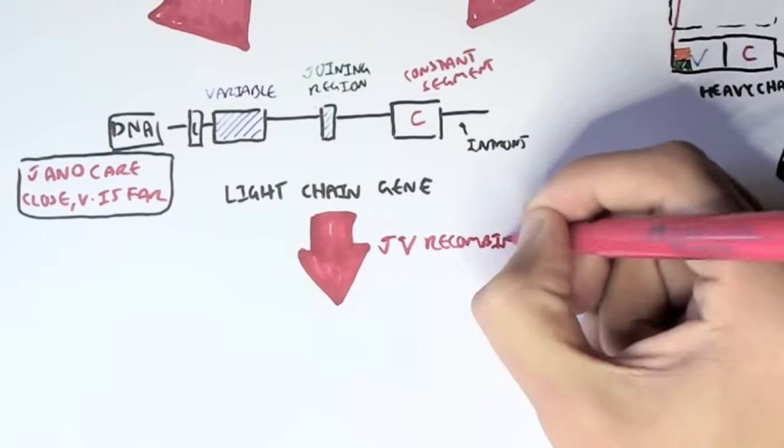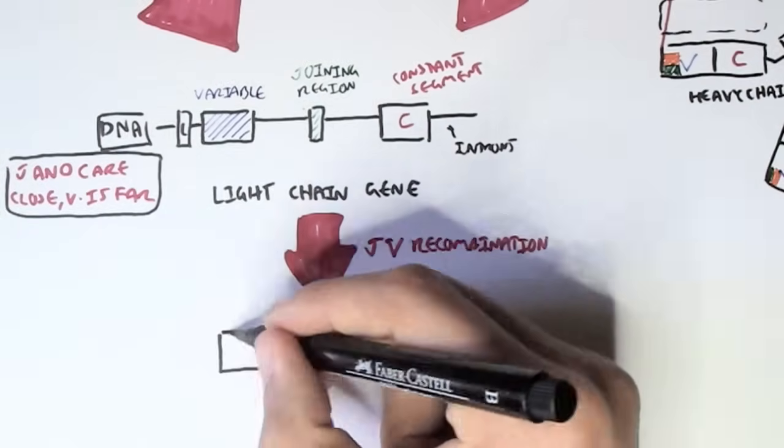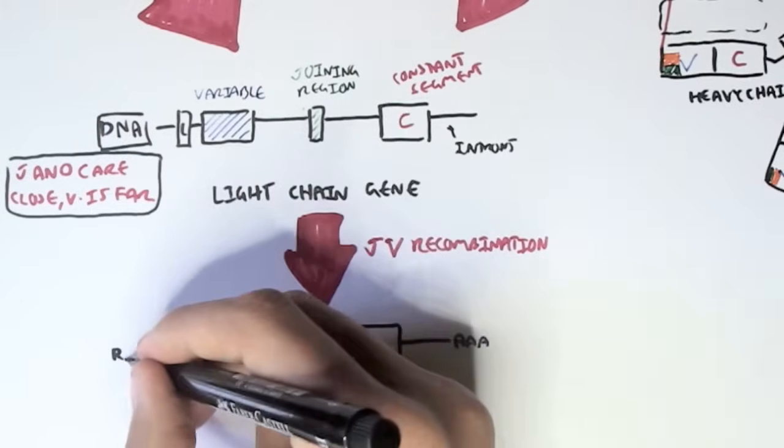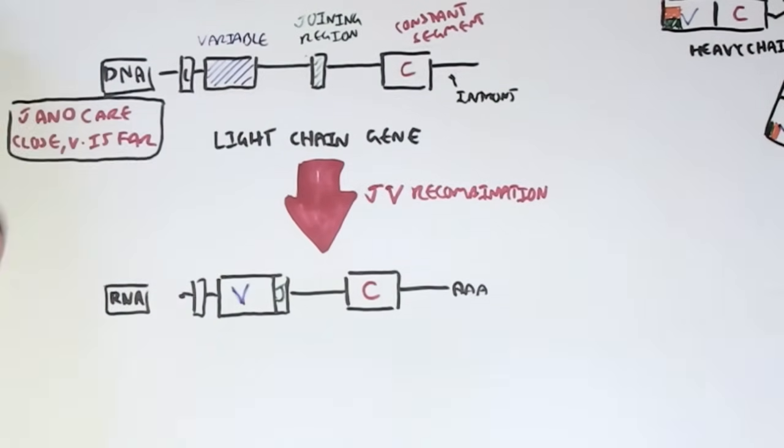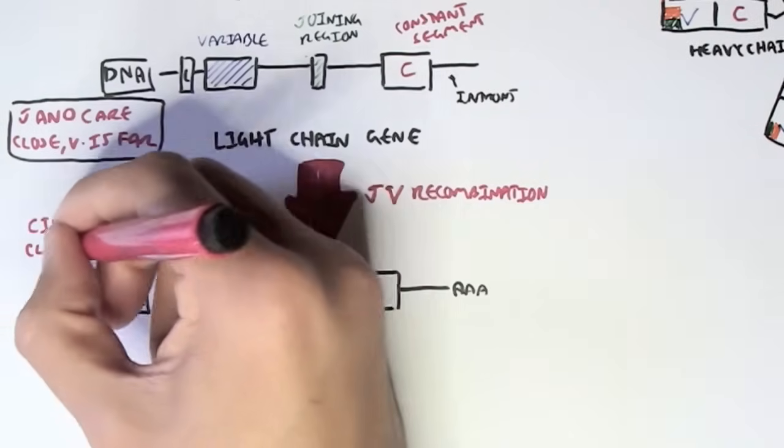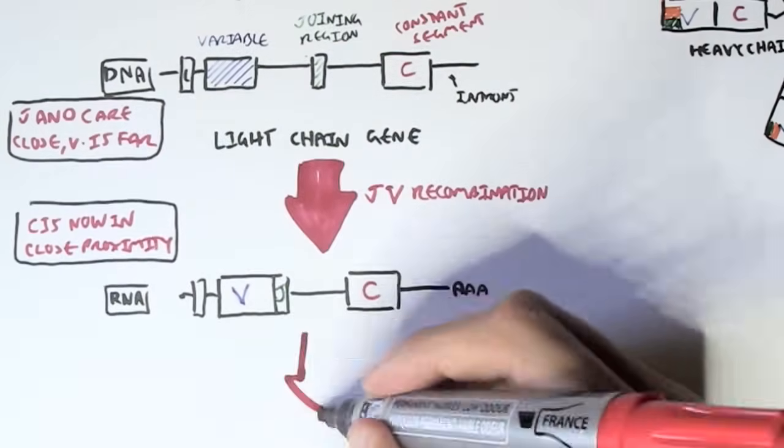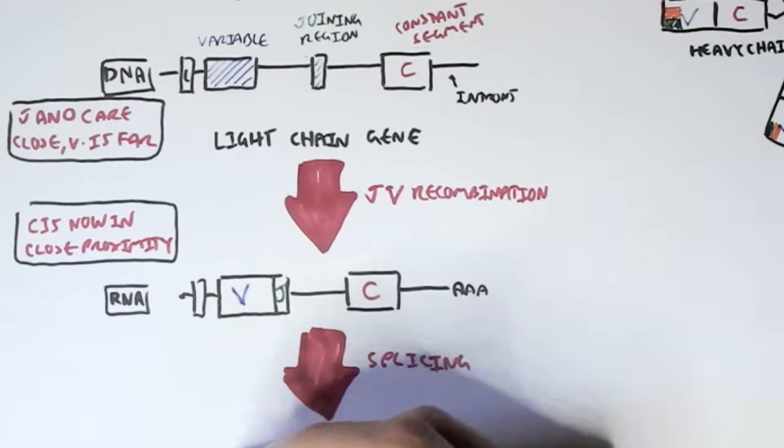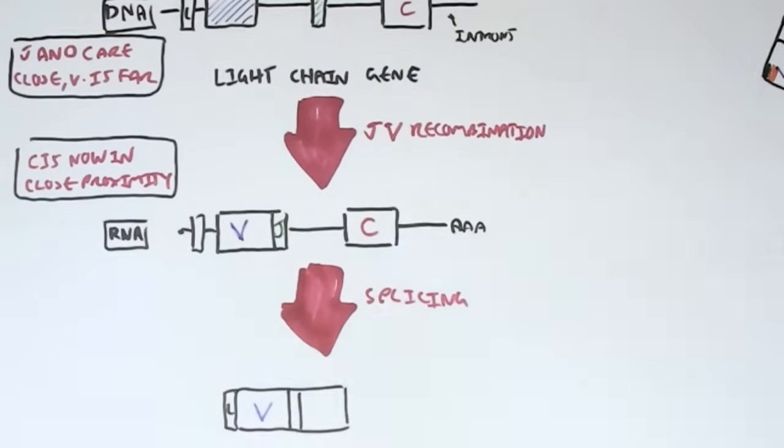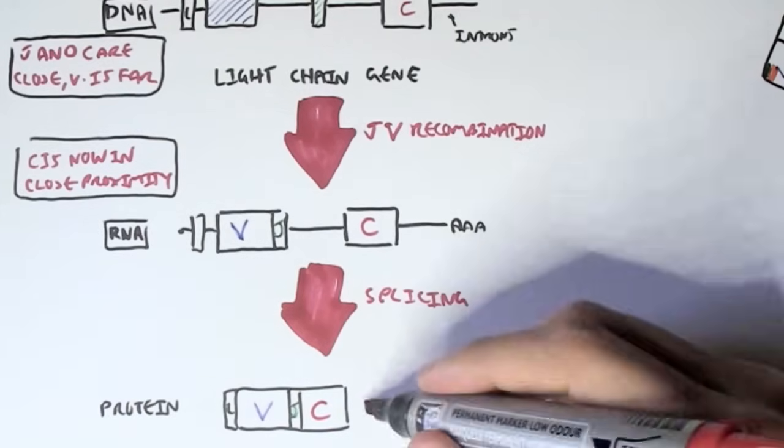Now what first happens is we have the J and V recombination, where the joining region and the variable region bind together to bring the constant region in close proximity. And essentially, after this, it gets transcribed to make RNA, which we have here, with a polyA tail. Now this RNA with the V and J bound together and the C in close proximity will then undergo splicing, the removal of the introns.